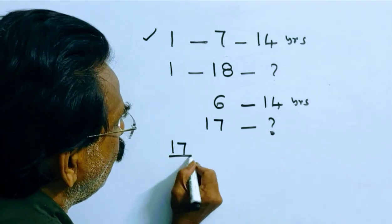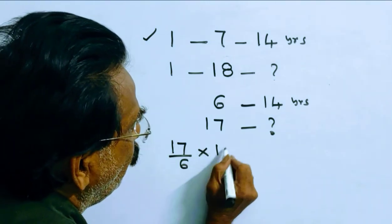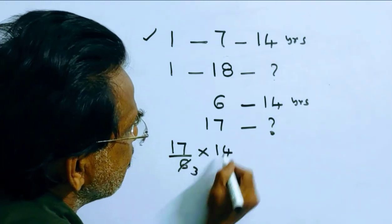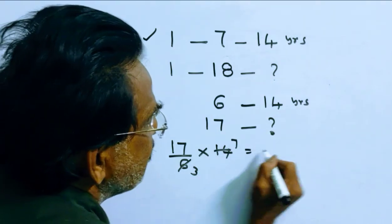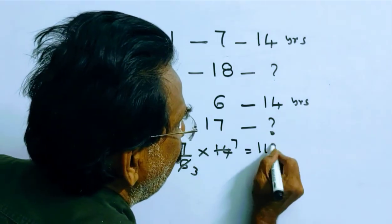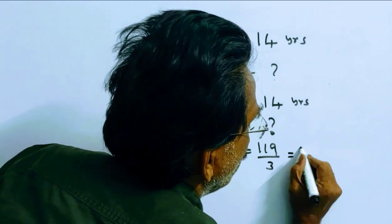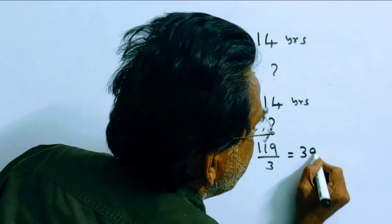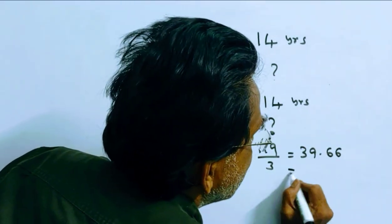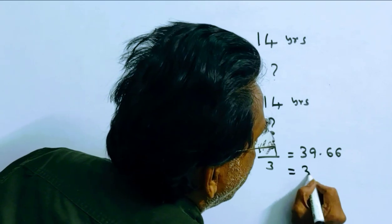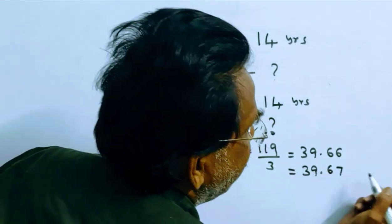17 over 6 into 14 — simplifying: 119 over 3, which is equal to approximately 39.67 years.